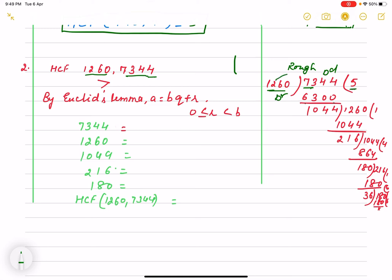We are getting 6300. When you are subtracting 4, 4 minus 0, 4. Again 4, 3 minus 3, 0. 7 minus 6, 0. 1, sorry.